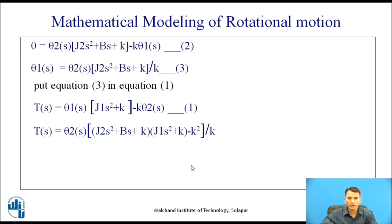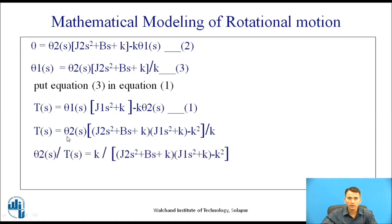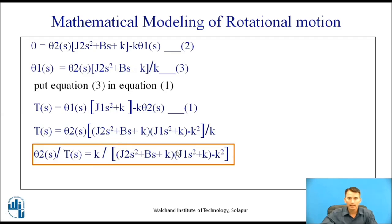To find the transfer function, dividing Θ₂(s) by T(s), we get: Θ₂(s)/T(s) = k / [(J₂s² + bs + k)·(J₁s² + k) − k²]. In this way, we can find differential equations and transfer functions for both translational and rotational mechanical systems.